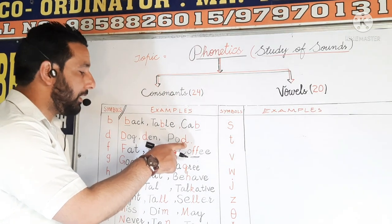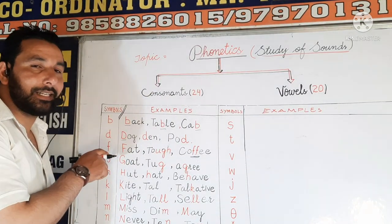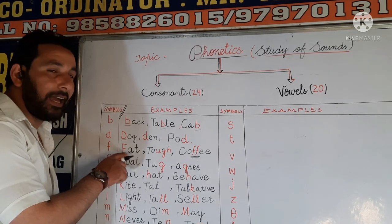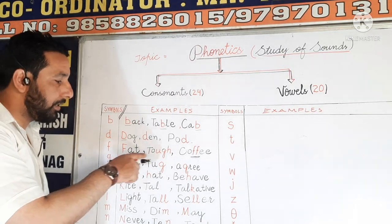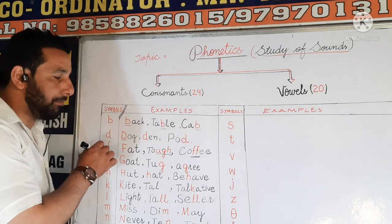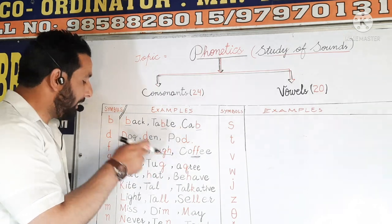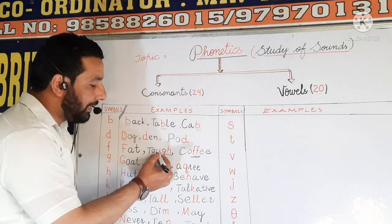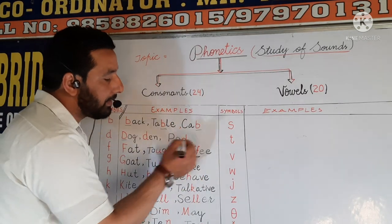Next is F. It looks like F and has the sound F. For example, we have 'fat' — the sound we produce here is F. Next is 'tough' — the sound we produce here is the sound of this phonetic symbol F. So here we experience that the sound of letters and the phonetic symbols are not always the same. In 'tough', the letters U-G-H produce the actual sound F. And here is another example: 'coffee'.